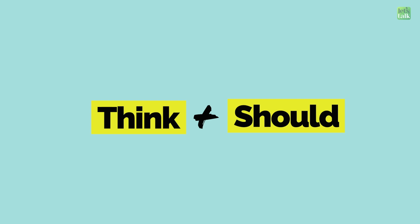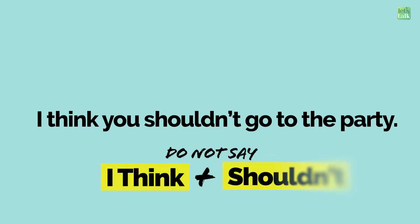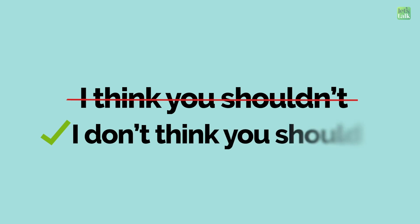You can also use the sentence structure 'think + should.' For instance, 'I think you shouldn't go to the party' — do you think this sentence is correct? This sentence is actually incorrect. As a rule, we do not use 'I think' and 'shouldn't' together. Instead, we add 'don't' before 'think' and make it negative: 'I don't think you should go to the party.' That's the correct sentence. Do not say 'I think you shouldn't' — always say 'I don't think you should.'